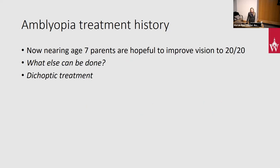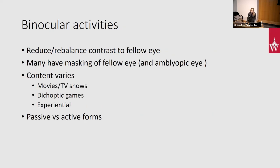So what else is there? There's dichoptic treatment — and that's what I really want to go into today. Dichoptic treatment at its core is a binocular activity the child participates in that in some way reduces or rebalances contrast to the fellow non-amblyopic eye, with a superimposed masking effect — often bilateral — so the amblyopic eye also gets some masking. There's a wide variety of content options: movies and TV shows, games, experiential alternate realities. There are active and passive forms.